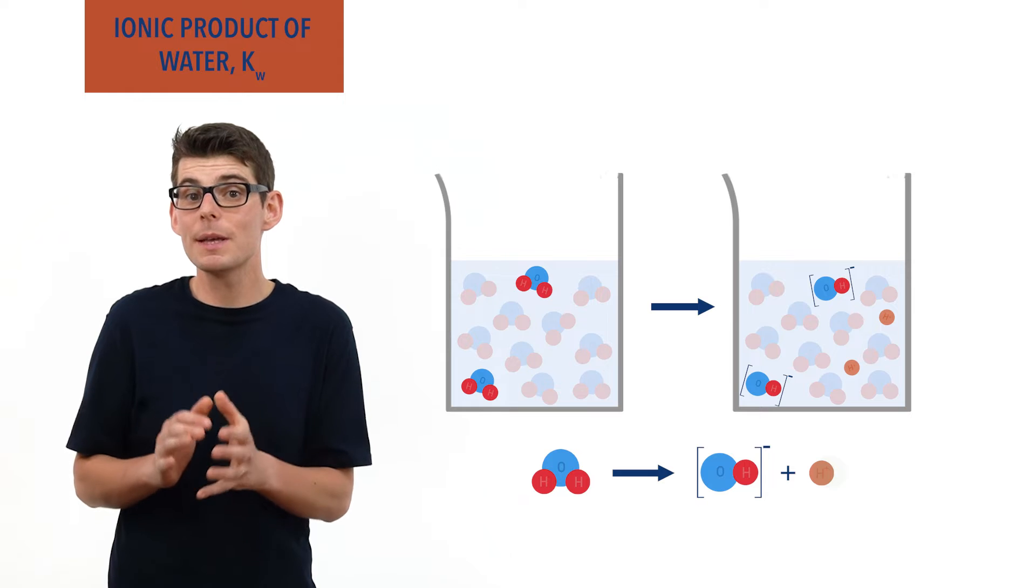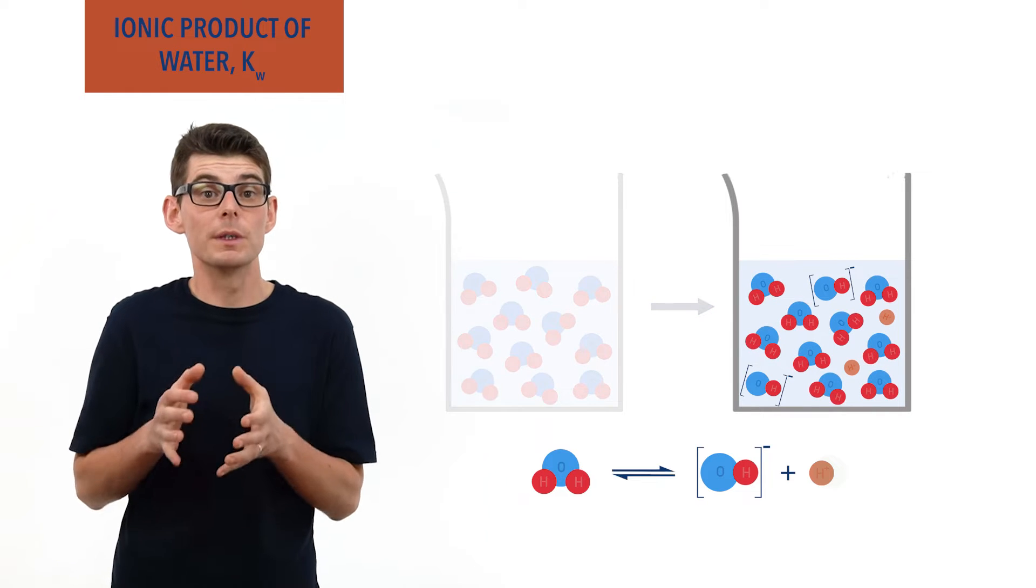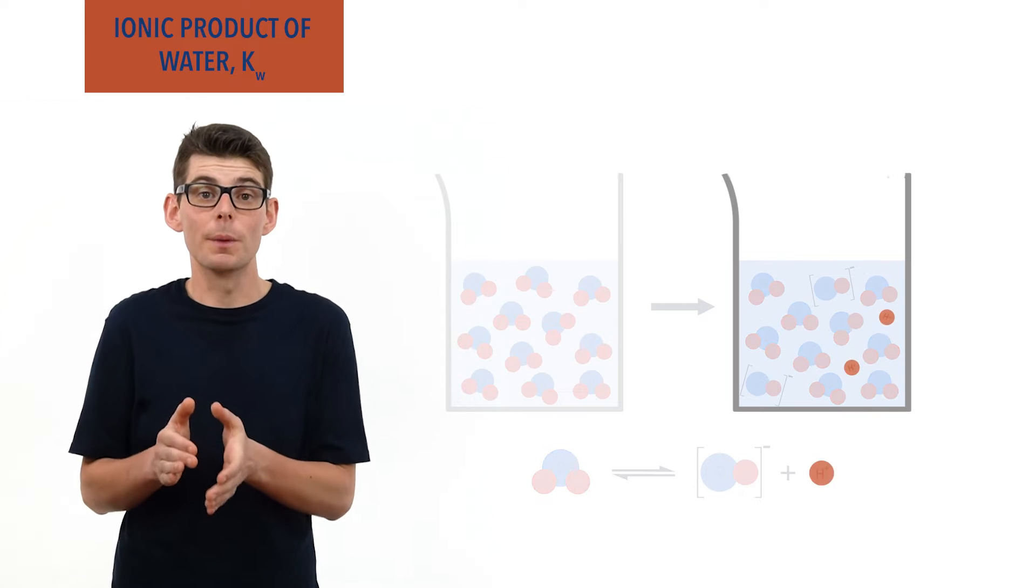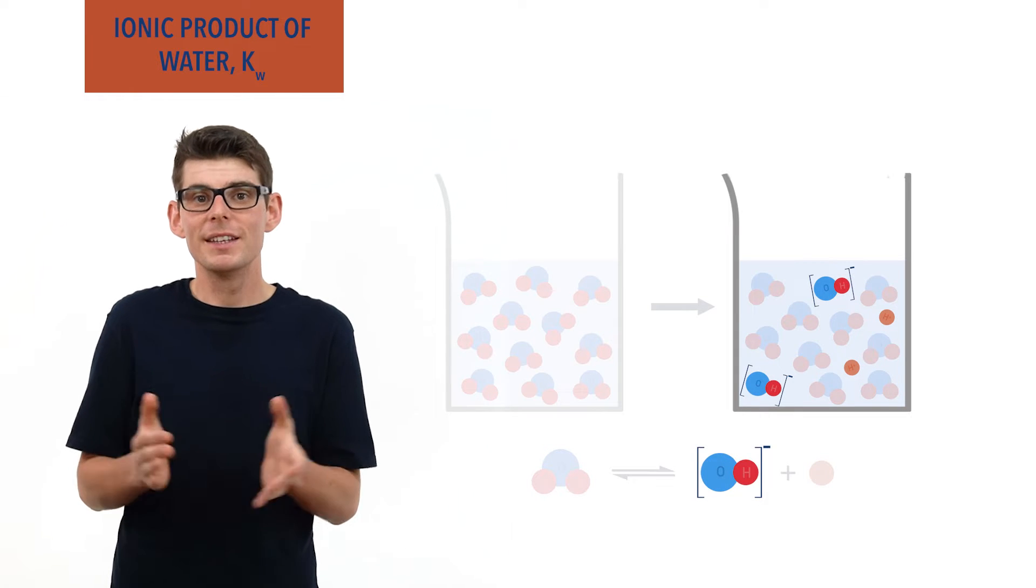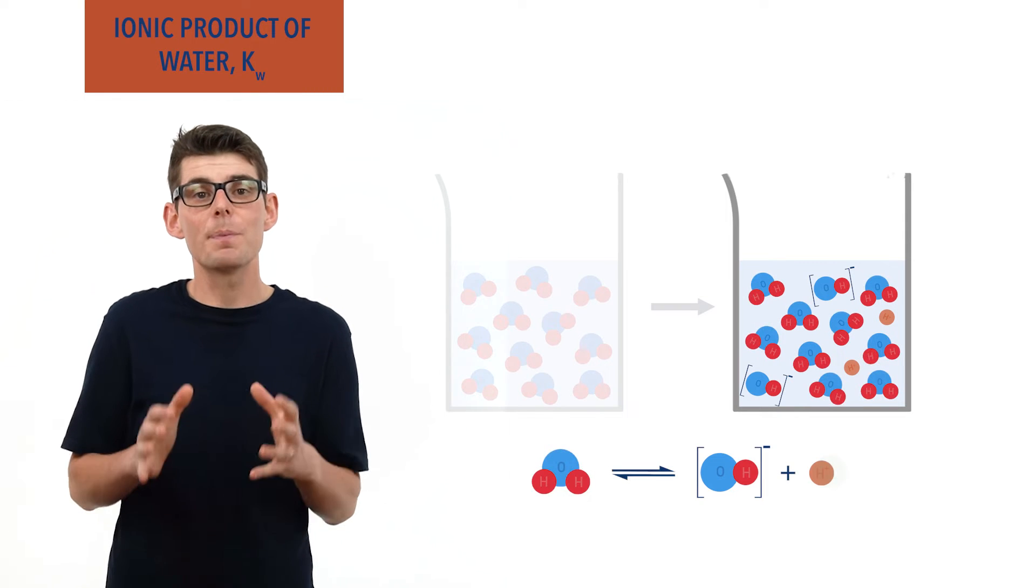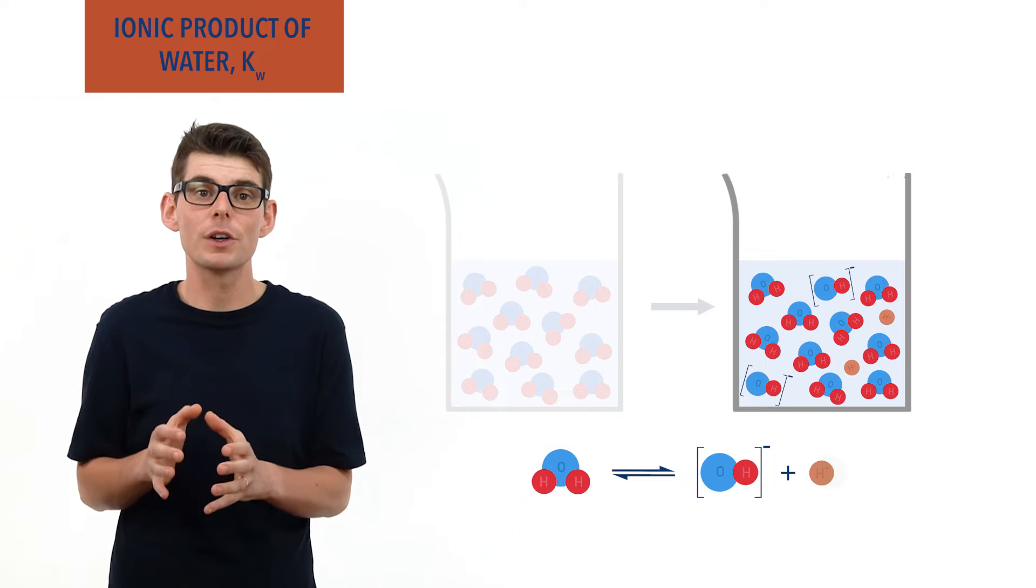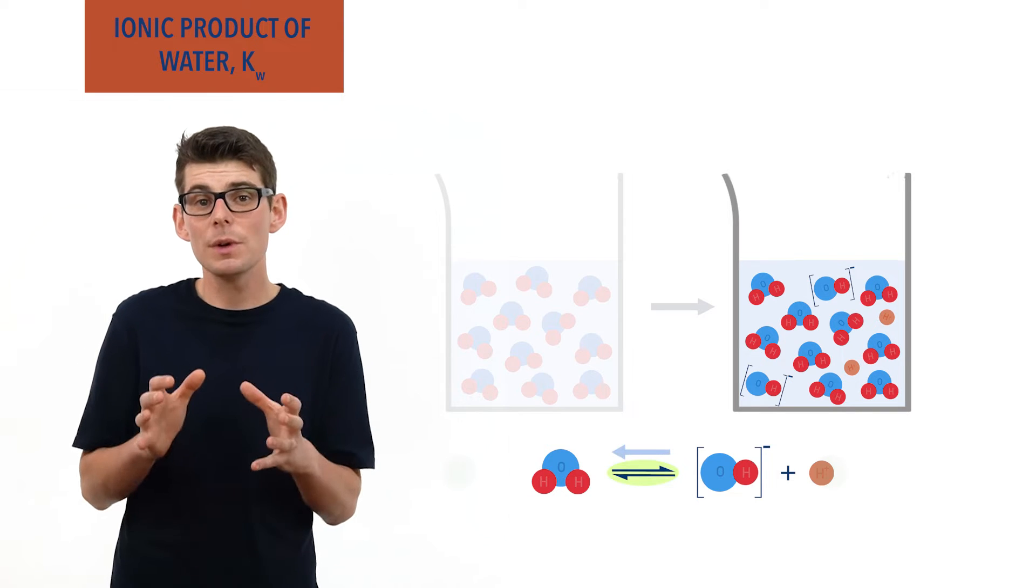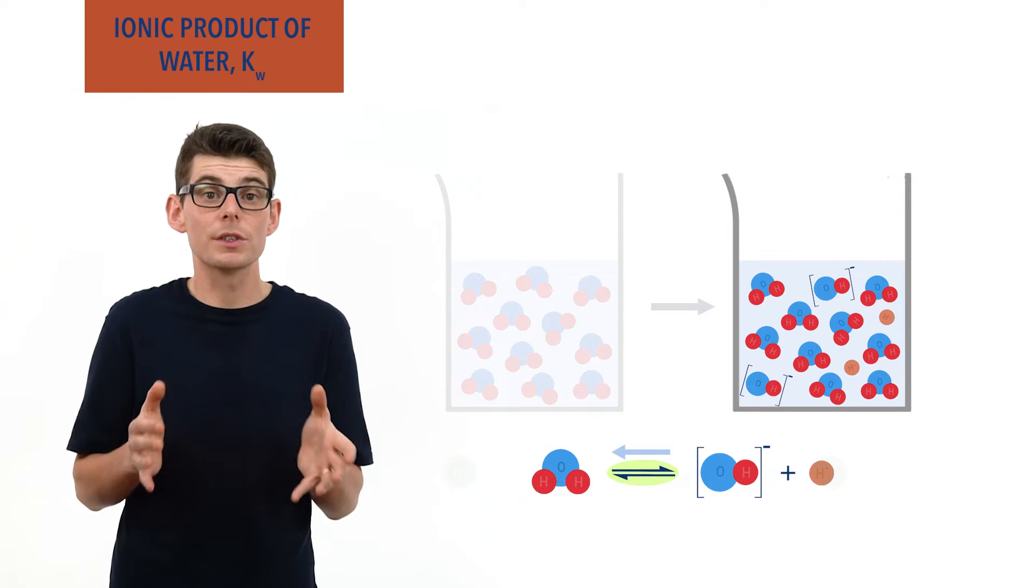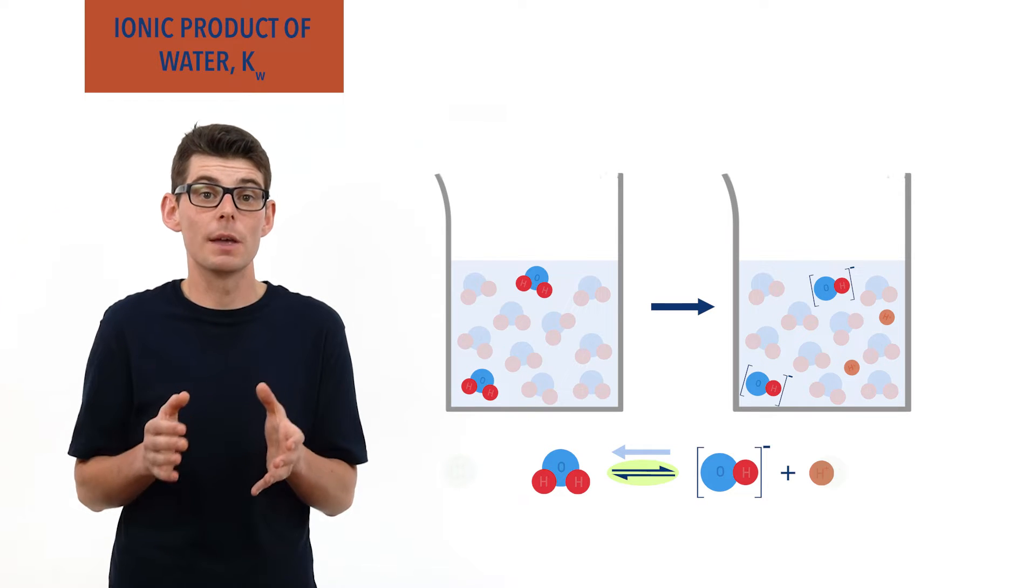This means there is an equilibrium system established between water molecules H2O, H plus ions and OH minus ions. Now, pretty usefully for us humans and for life in general, the position of this equilibrium lies very far to the left, meaning only a very small percentage of H2O molecules are dissociated at any one time in water.